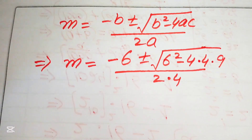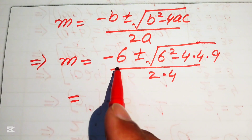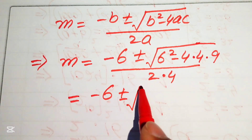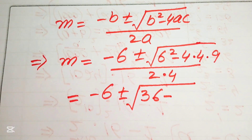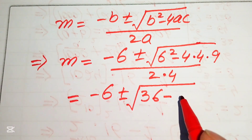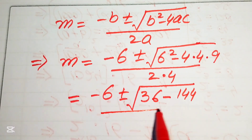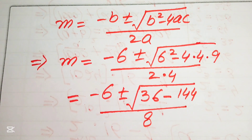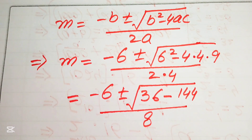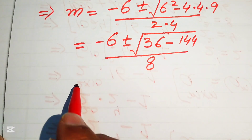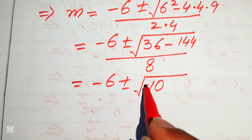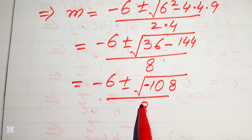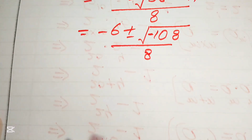Simplifying: m = (−6 ± √(36 − 144)) / 8. We compute 4 × 4 × 9 = 144 and 2 × 4 = 8. So 36 − 144 = −108, giving m = (−6 ± √(−108)) / 8.